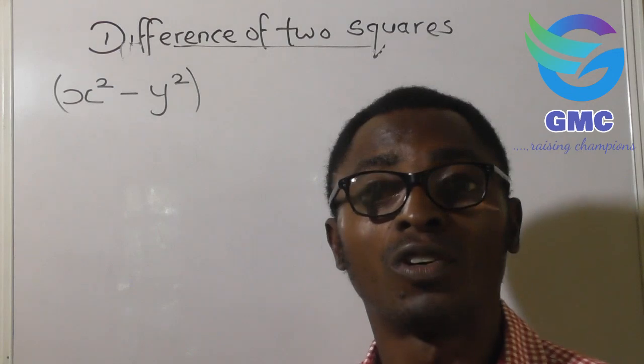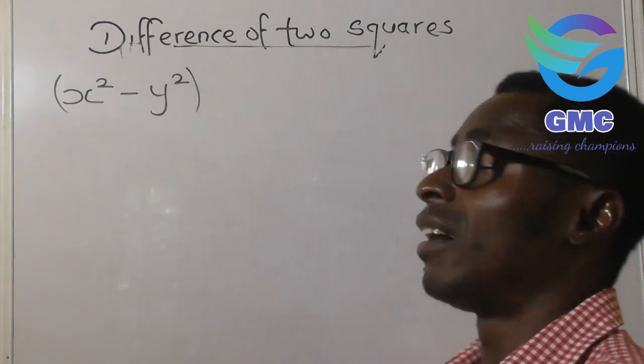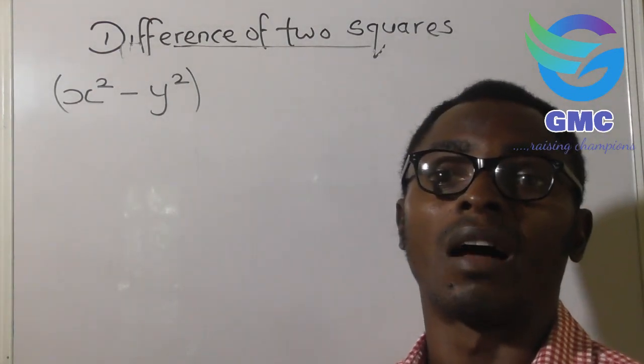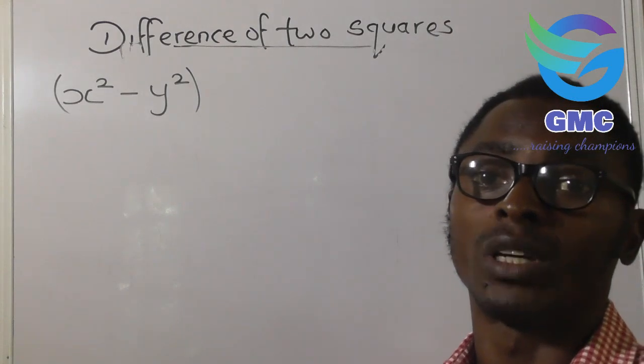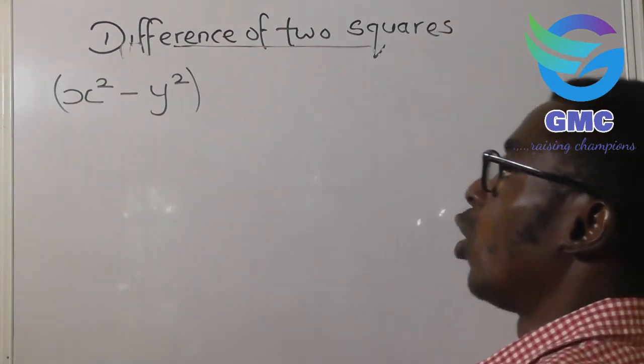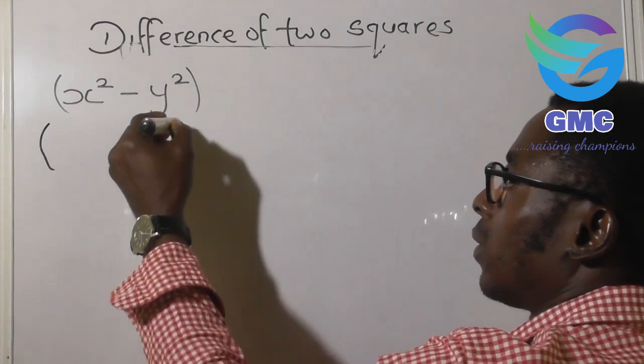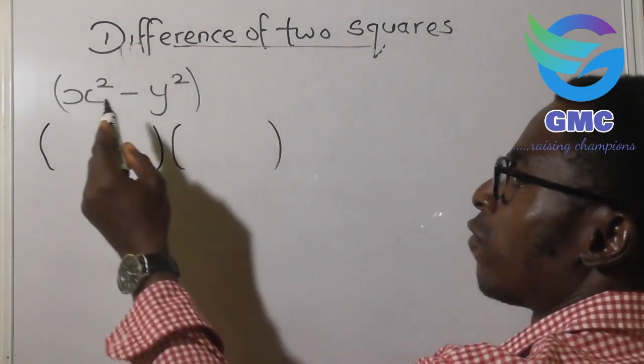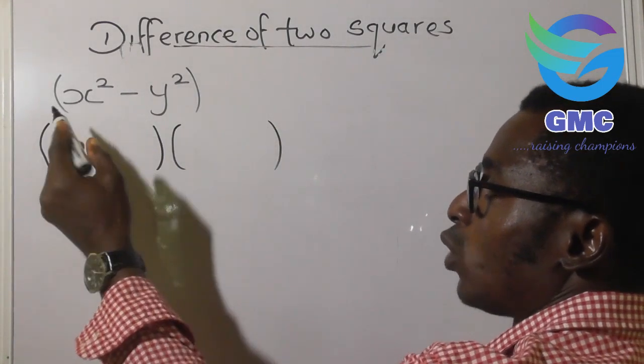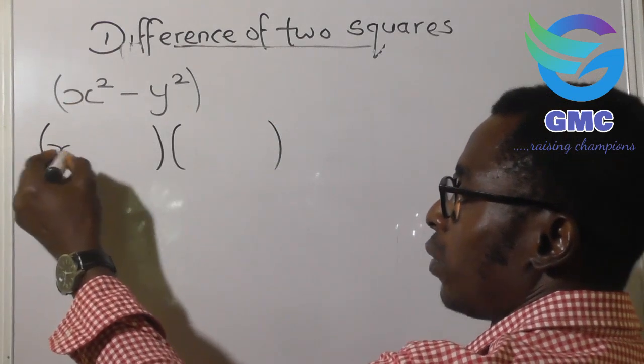So after we solve questions that border around difference of two squares, what you do is you open two brackets this way. Find the square root of the first variable. The square root of x squared is x, that's first.